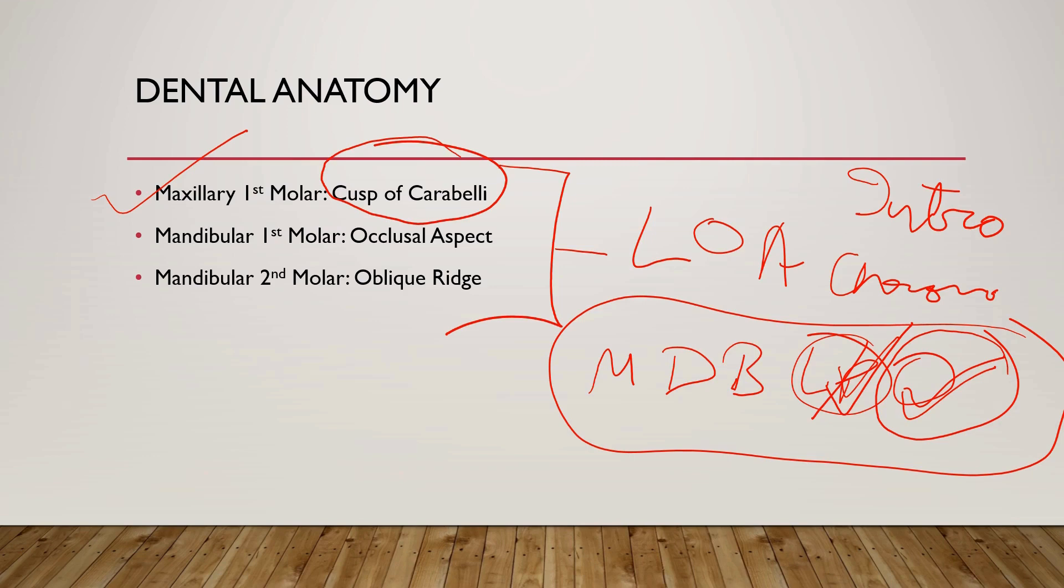For the mandibular first and mandibular second, the occlusal aspects are very important. Here the occlusal aspect, and in the second molar, the oblique ridge is the most important. You have to write the definition and draw a diagram about how the oblique ridge is seen on the occlusal surface of the mandibular second molar. That's all about the dental anatomy.